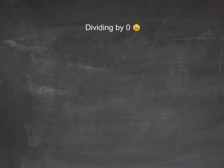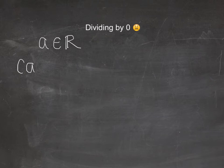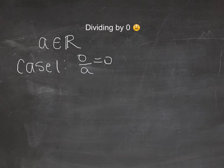Let's say we have some real number A and we're going to look at three different cases. Case one: if I have zero divided by that real number A, that's just equal to zero. We can do zero divided by a number, that's fine, that's zero.